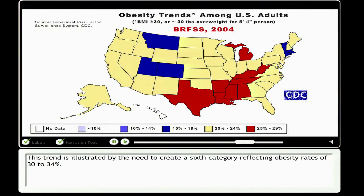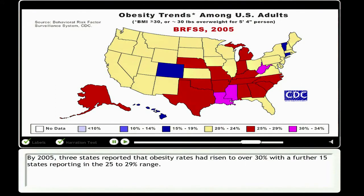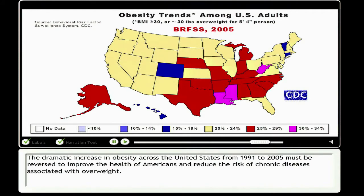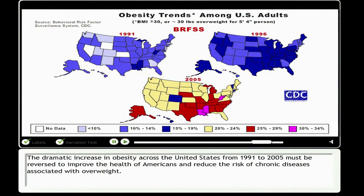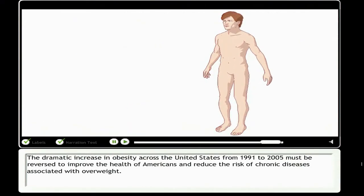This trend is illustrated by the need to create a sixth category reflecting obesity rates of 30 to 34 percent. By 2005, three states reported obesity rates over 30 percent, with a further 15 states in the 25 to 29 percent range. The dramatic increase in obesity across the United States from 1991 to 2005 must be reversed to improve the health of Americans and reduce the risk of chronic diseases associated with overweight.